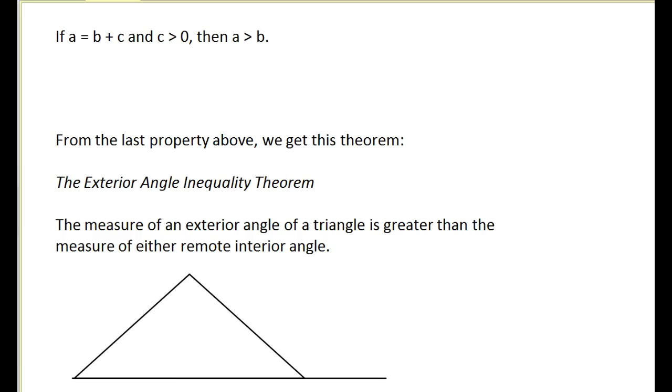So from the last property above, we get this theorem, the exterior angle inequality theorem. And it says that the measure of an exterior angle of a triangle is greater than the measure of either remote interior angle. So if I call this angle one and this angle two and this exterior angle three, you may remember that the measure of angle three is equal to the measure of angle one plus the measure of angle two. We call that the exterior angle triangle theorem.